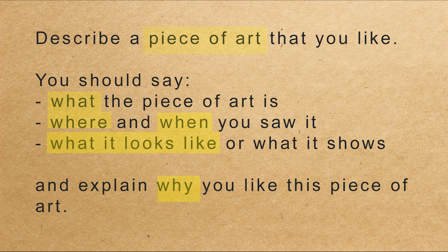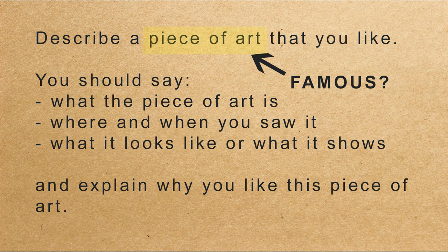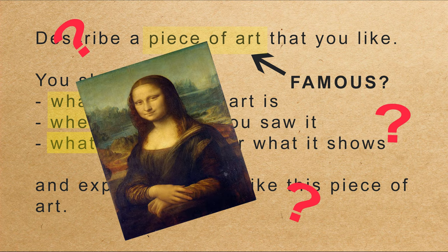Then you have to focus on those ideas on the cue card: what is it, when and where did you see it, what does it look like, and why do you like it? Remember also that it just says 'piece of art' — it doesn't say 'famous piece of art.' This is a small distinction, but it means that maybe your friend made something and you can talk about that rather than a famous painting such as the Mona Lisa.